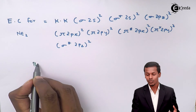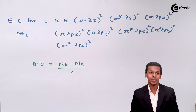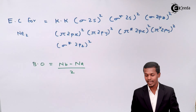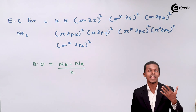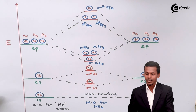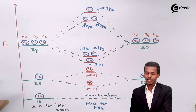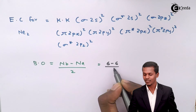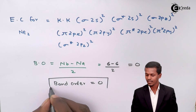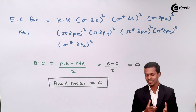Talking about the bond order, we know the formula: (Nb minus Na) divided by 2, where Nb is the number of electrons in bonding orbitals and Na is the number in anti-bonding orbitals. The total number of electrons in bonding orbitals is 6, and in anti-bonding orbitals is also 6. So bond order equals (6 minus 6) divided by 2, which equals 0. A bond order of 0 indicates there is no bond between the two neon atoms, which is why neon exists in a monoatomic state.